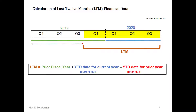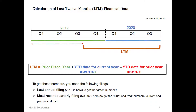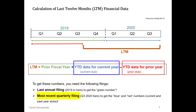So the LTM numbers are computed by summing the data for the prior fiscal year and the year-to-date data for the current year, and deducting the year-to-date data for the prior year. Sometimes, current year-to-date data is referred to as current stock. Regardless of where in the fiscal year you are, you need only two filings from the company to do your computations: the most recent annual filing — in our example, the 2019 annual filing — and the most recent quarterly filing — in our example, the third quarter filing. In the quarterly filing, you get both the year-to-date data for this year and the prior year, so both figures will be found in the quarterly filing.